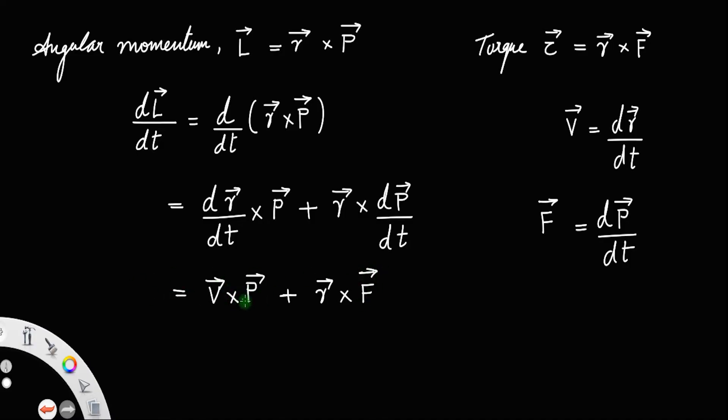Again, this P can be written as the linear momentum. Linear momentum is actually the mass of the body times the velocity. So P equal to mV. Since mass is a scalar, you do not have to put that vector side plus this R cross F, we know it is torque.